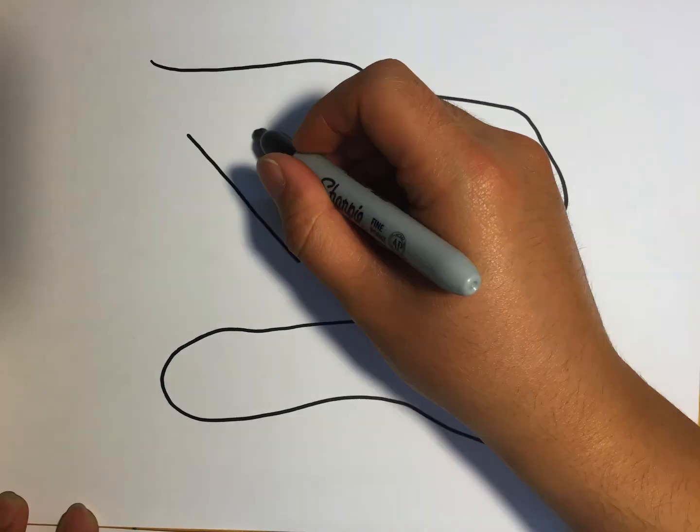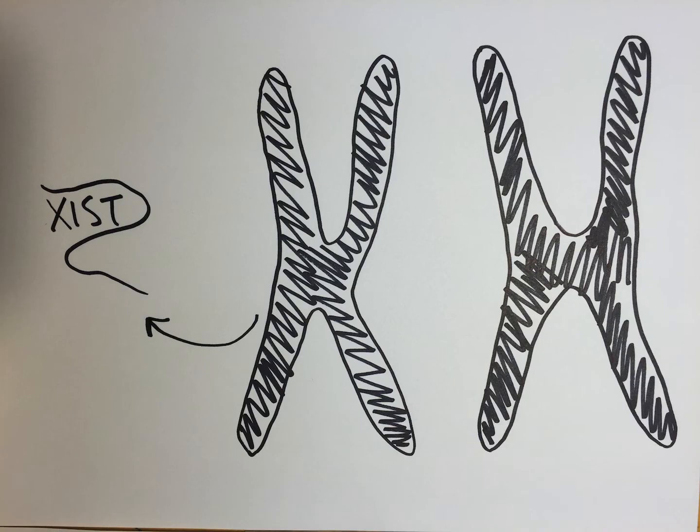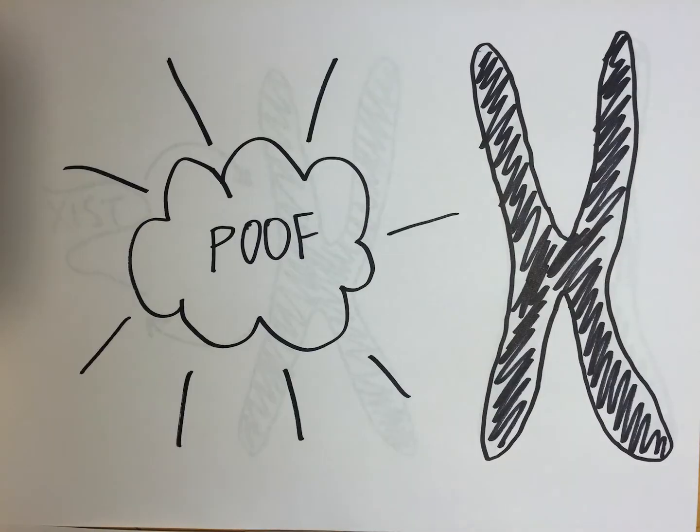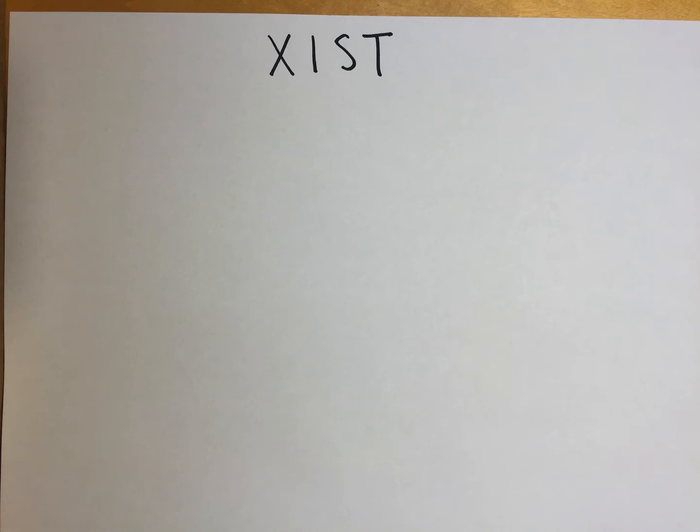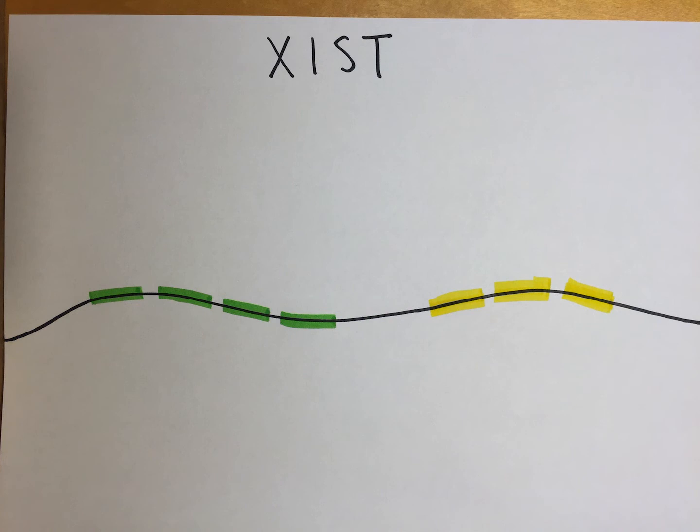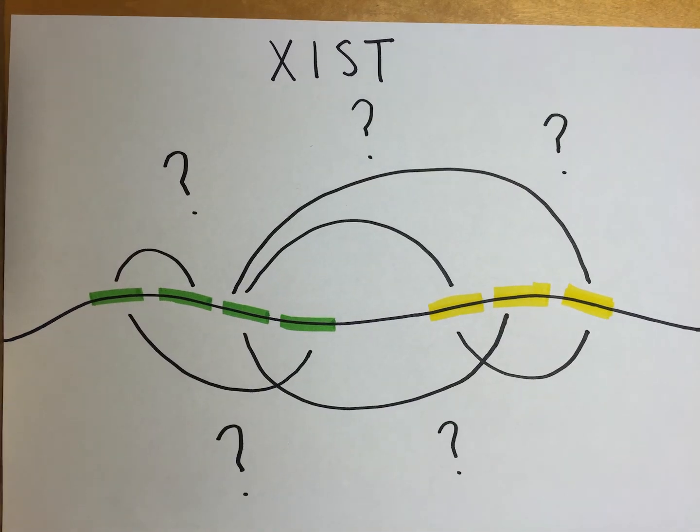We applied PARIS to an important RNA called XIST. This 19 kilobase long non-coding RNA is essential for X chromosome silencing in mammalian development. However, it presents many challenges. First of all, the large size makes it difficult to get a full picture of its structure. Second, there are many repetitive regions, making it hard to pin down the exact base pairing regions.